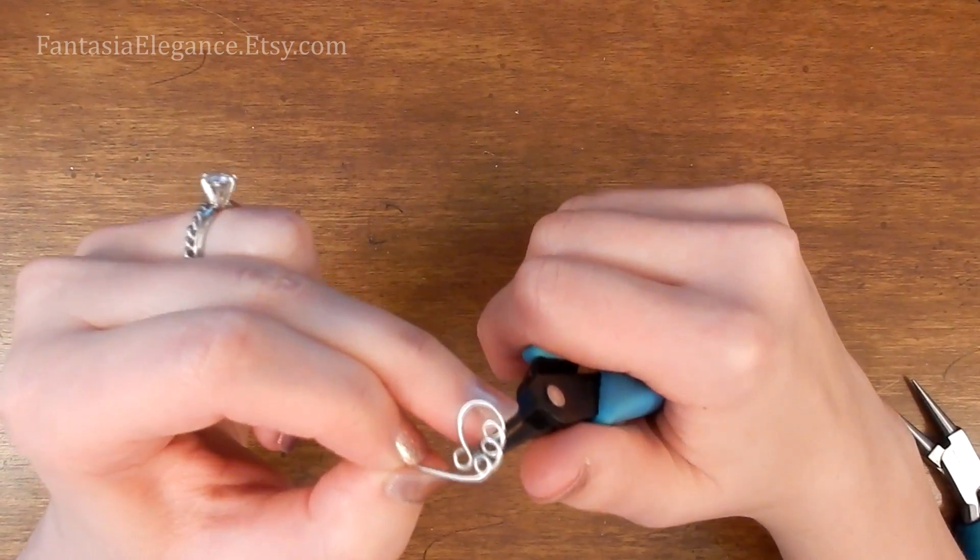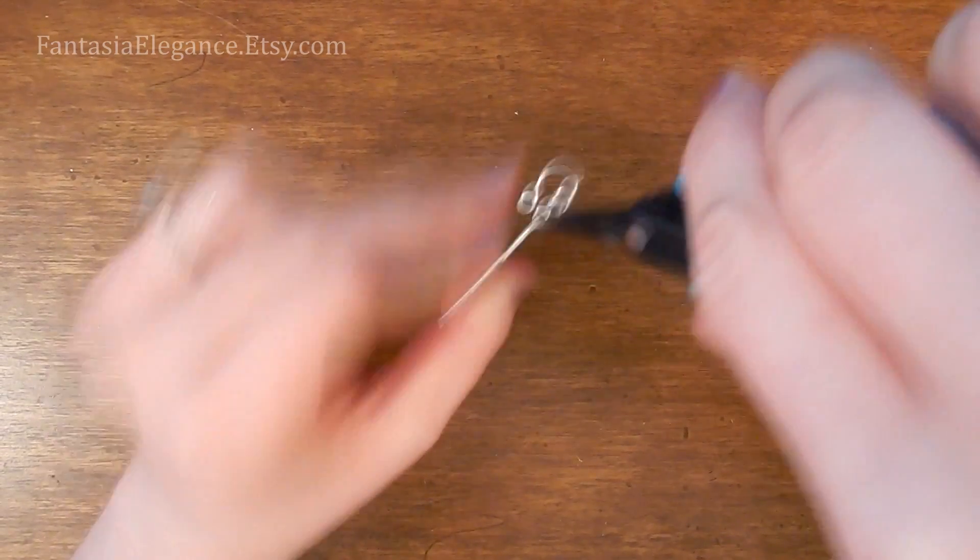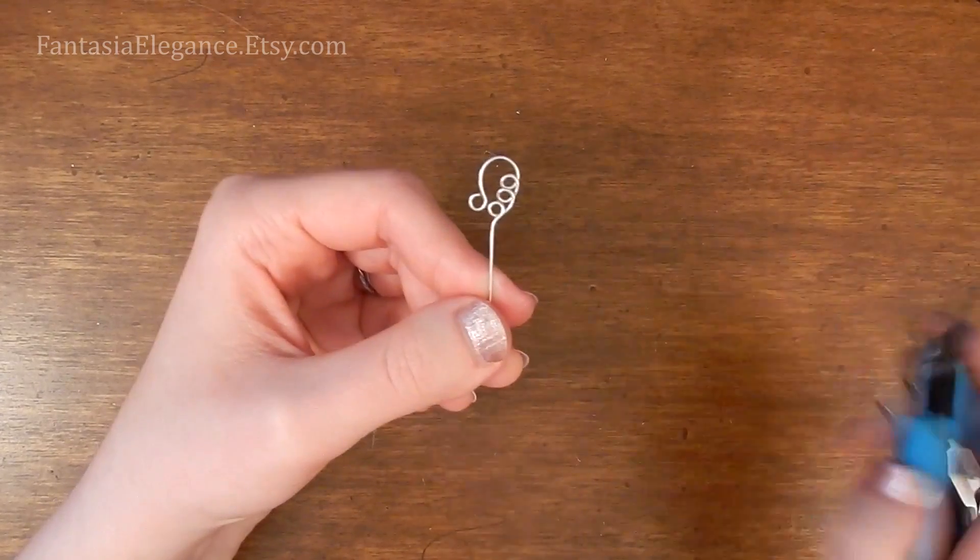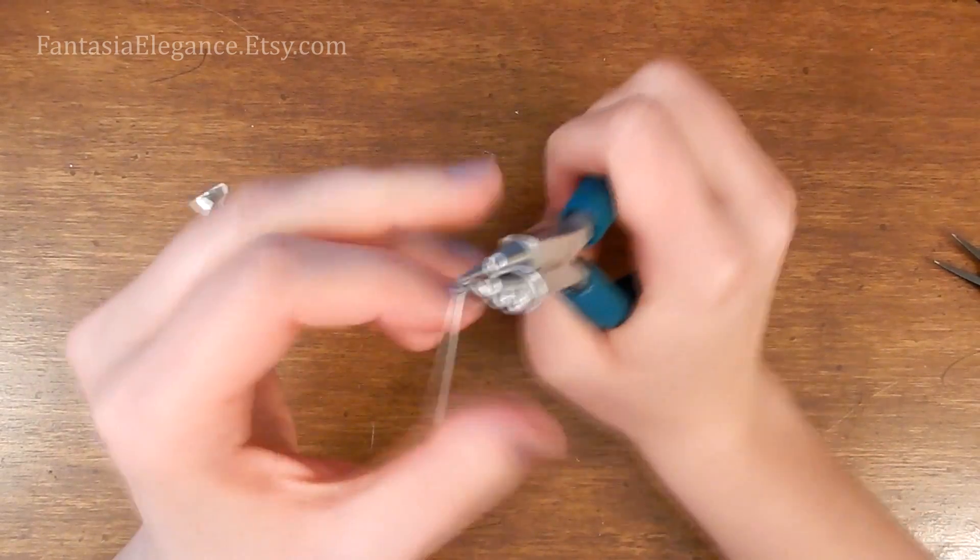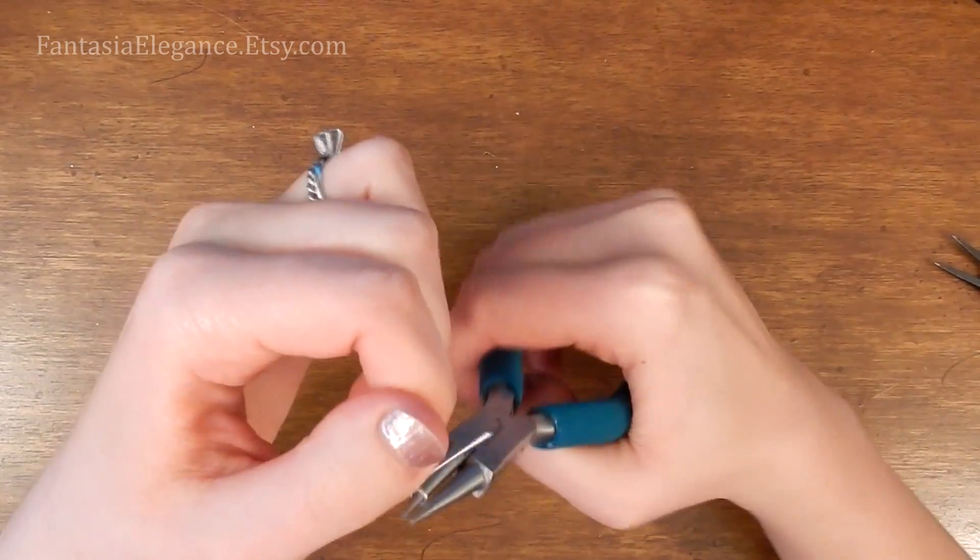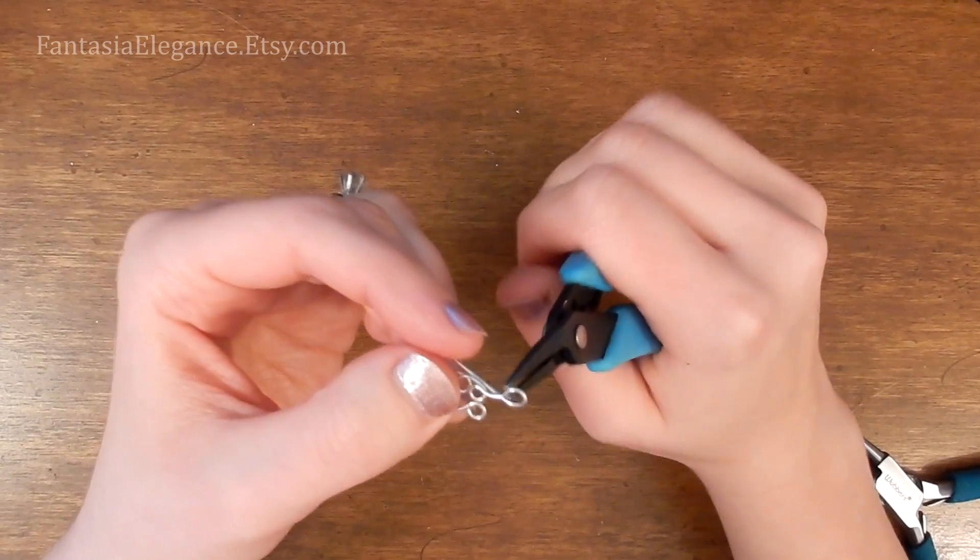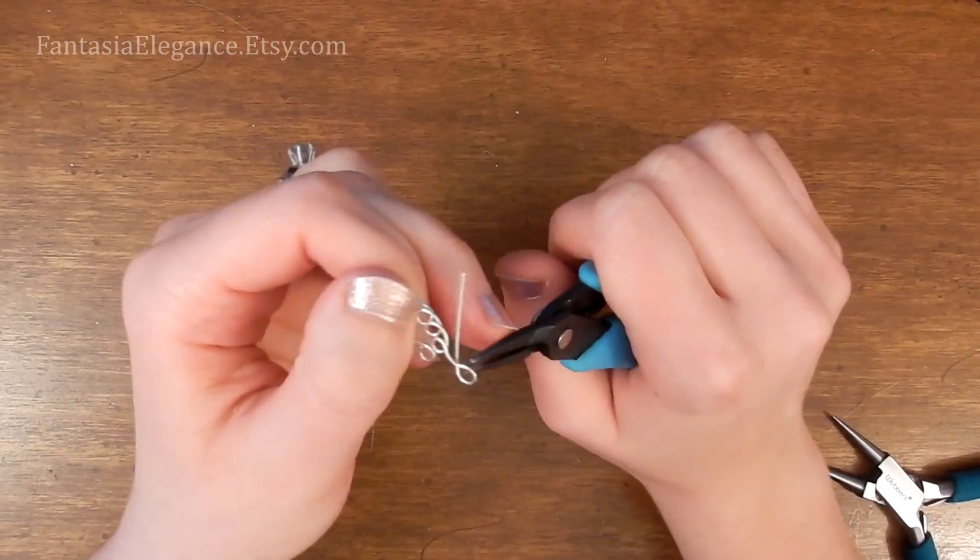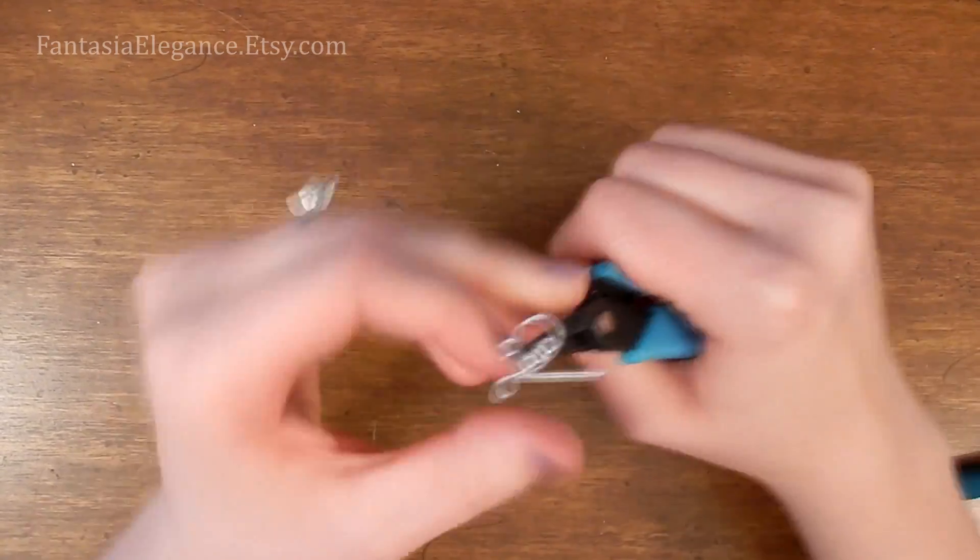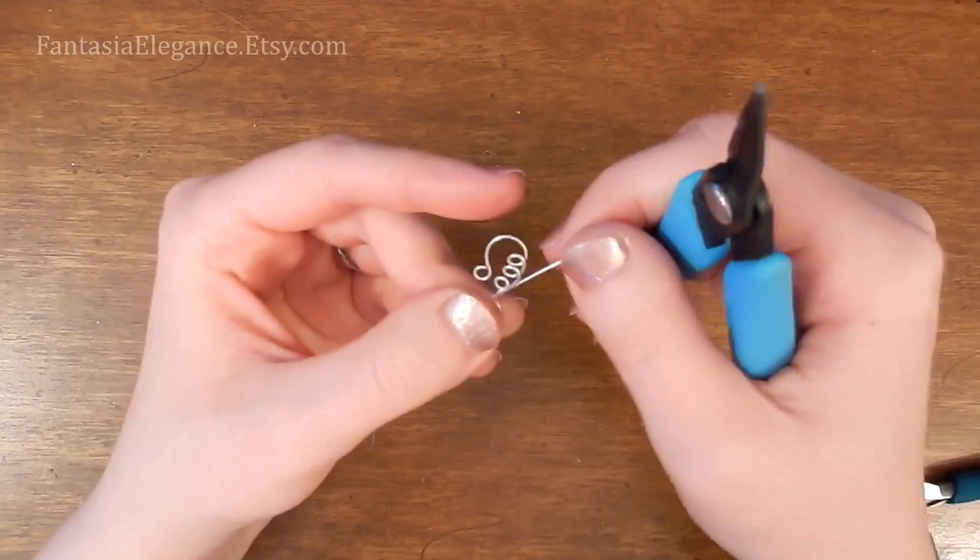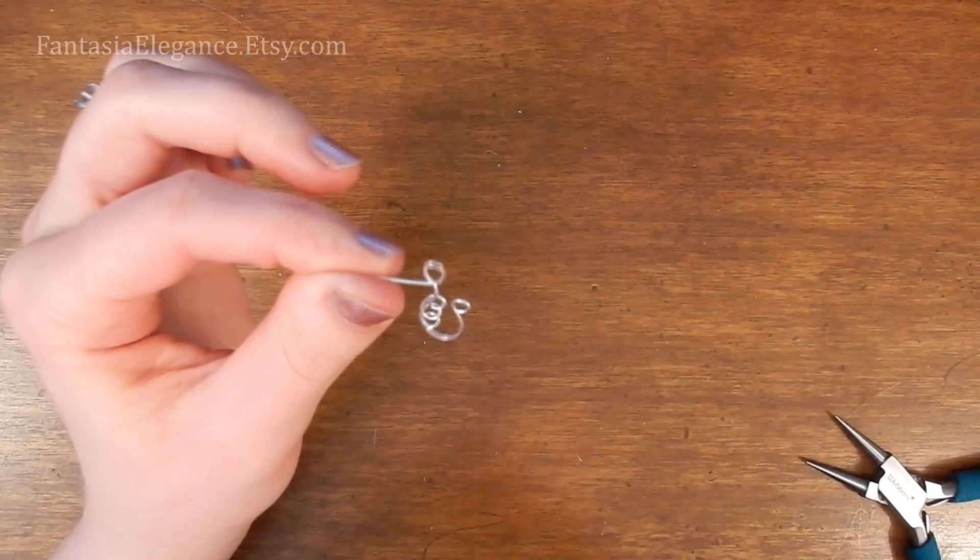And then we're going to use this wire at the bottom to make once again a wrapped loop. So I'm going to take it off going straight like that and put in a little loop at the bottom. And I actually want this to be more of a teardrop shape, so I'll lengthen that a little.